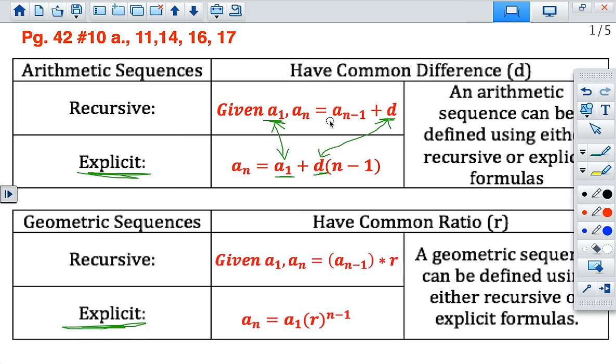The differences on the different types of formulas: with the recursive, you have the formula defined A sub n would be whatever your previous term is plus the common difference. With your explicit formula, you don't have to worry about your previous term anymore. You just have your first term, your common difference, and then n minus 1 in parentheses. And we've spent lots of time figuring out how to find this information and how to distribute and simplify your equation. So we're not going to spend any more time on that in this video.